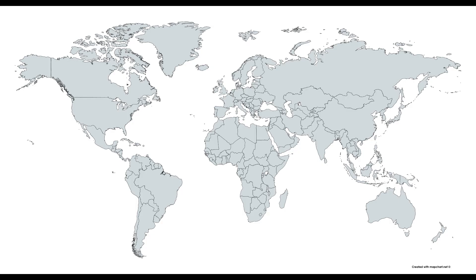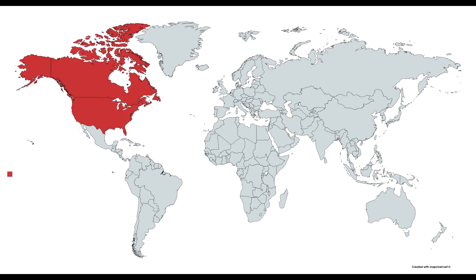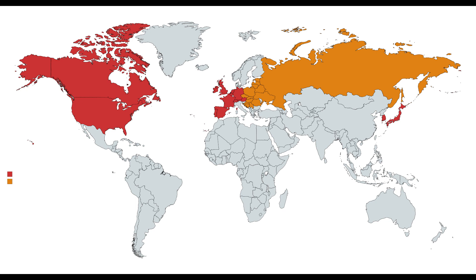Almost all temperate zone countries have either high income economies, as in the cases of North America, Western Europe, Korea, and Japan, or middle-income economies held back by socialist policies in the past, as in the case of Eastern Europe, the former Soviet Union, and China.